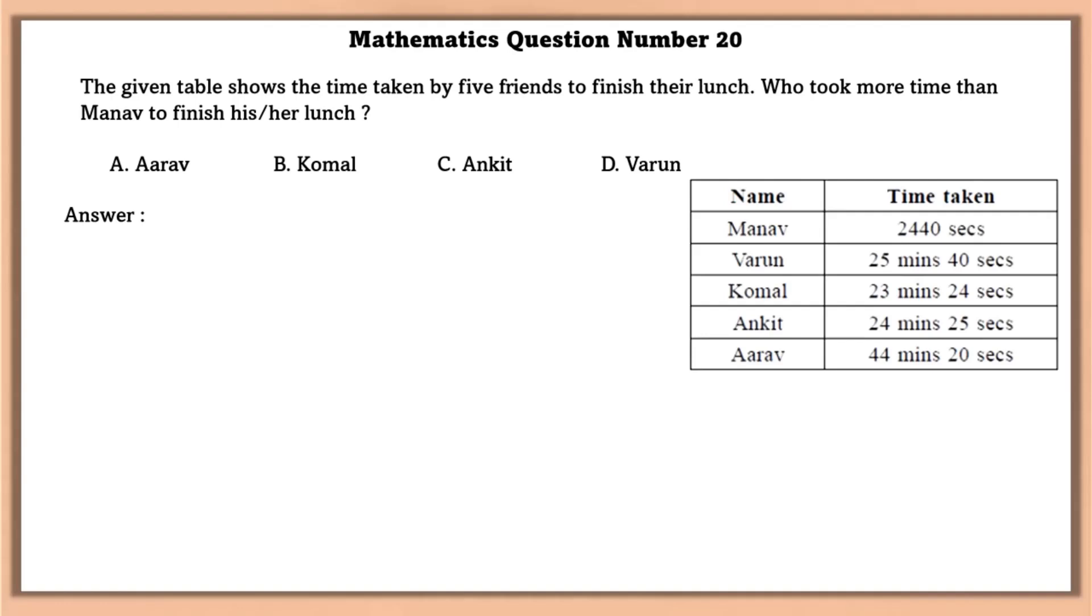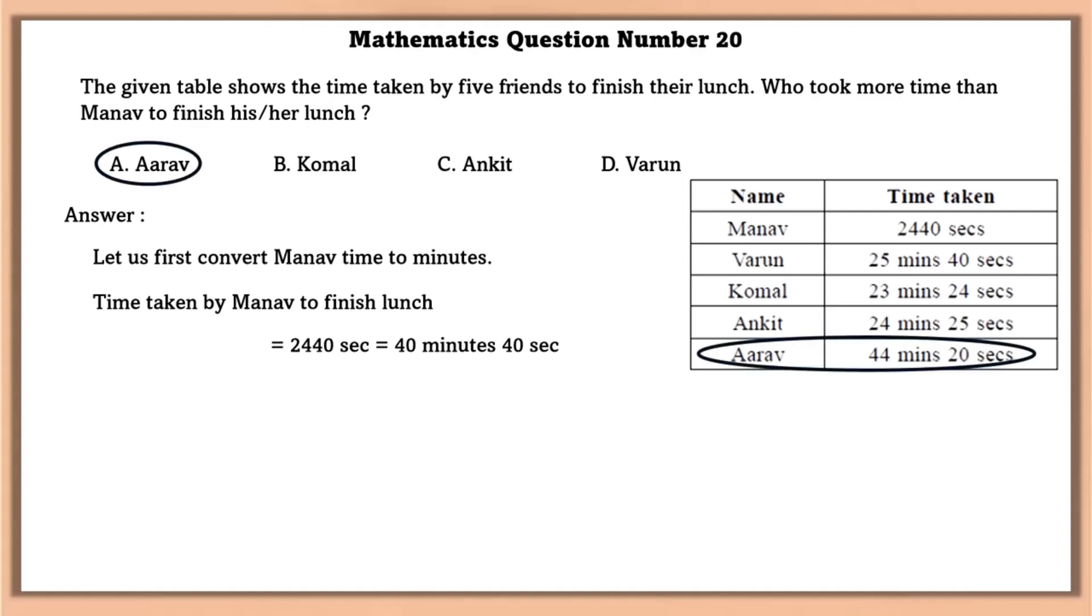Mathematics question number 20. The given table shows the time taken by 5 friends to finish their lunch. Who took more time than Manav to finish his or her lunch? Now first, let us convert Manav's time into minutes. So Manav took 40 minutes and 40 seconds to eat his lunch. Now using the table, we can see that Rav takes 44 minutes. So Rav takes more time than Manav to finish his lunch.